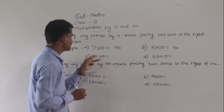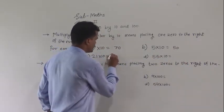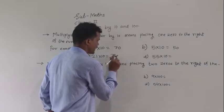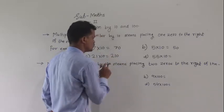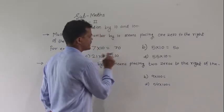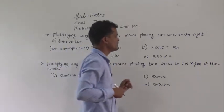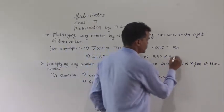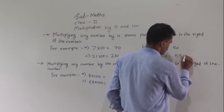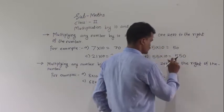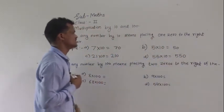See 21 into 10: write 21 and at the right of that 21 put a zero, so 210 is the answer. Then 55 multiplied by 10: write 55 and put a zero at the right, so 550 is the answer.